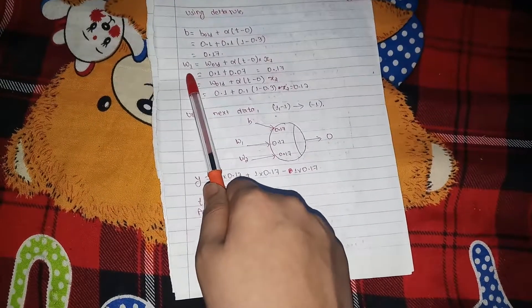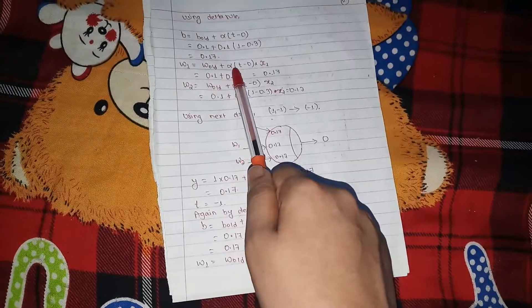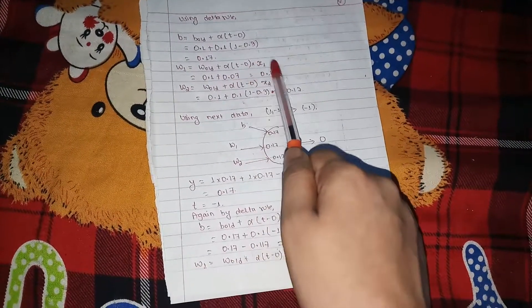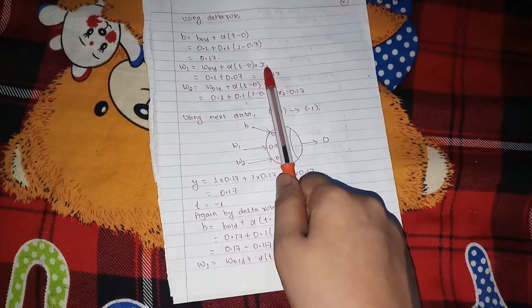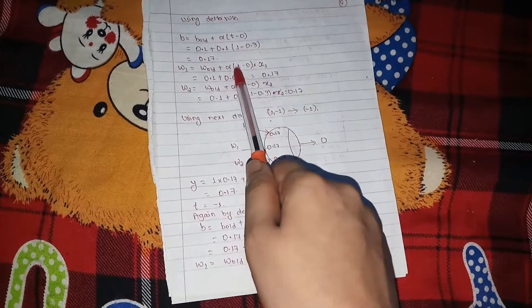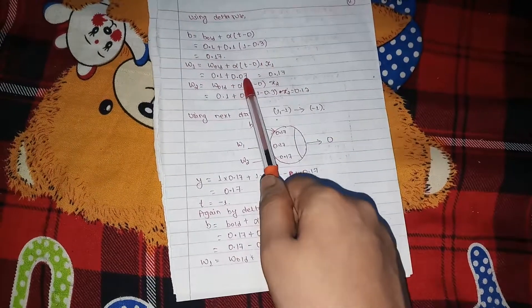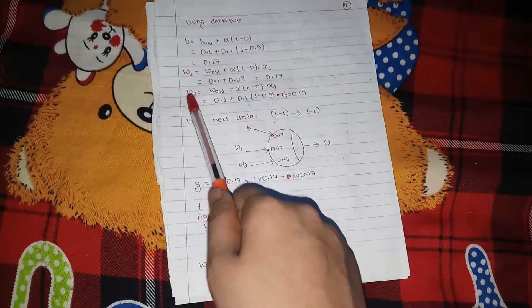So similarly, we find the new weight, that is for the W1. W1 is equals to W1 plus alpha T minus O times X1. X1 is the input, so X1 is the 1, and alpha times T minus O is similar to this component, so we can add 0.0, so similarly, we find the W2.